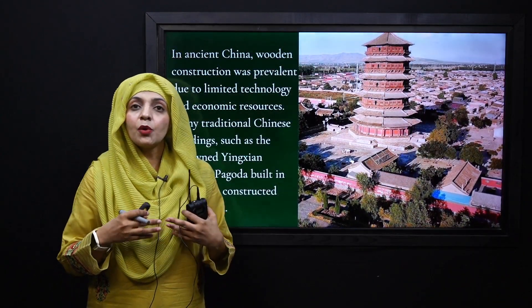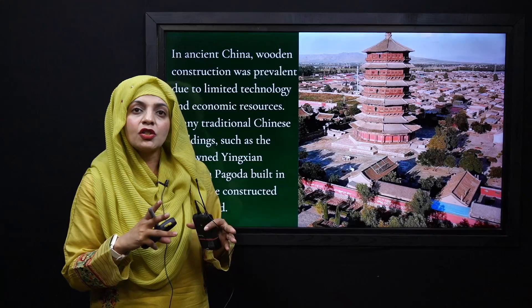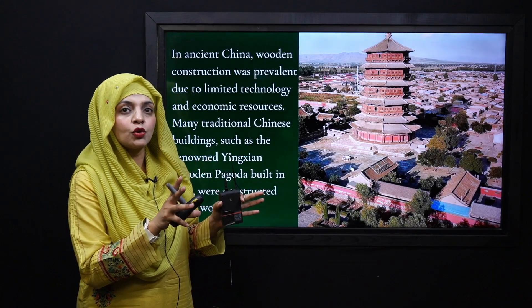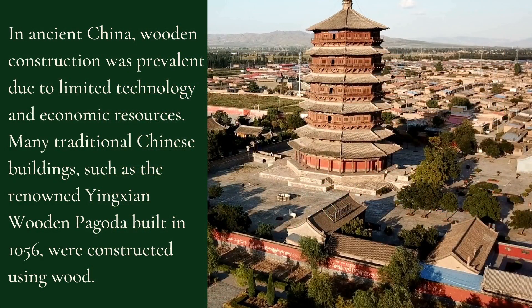My dear students, Chinese architecture is very famous, and when we talk about the world of China, we can see some ancient buildings. This wooden construction is very important and very famous. The renowned Yingxian Wooden Pagoda was built in 1056 and is totally made up of wood. See how tall it is and it is made in a circular way.